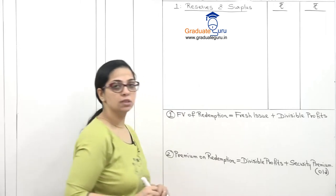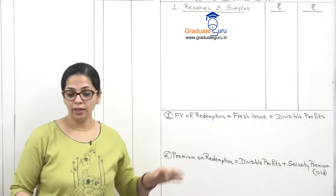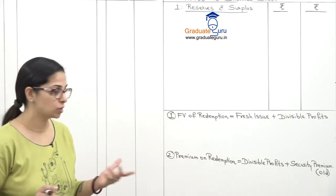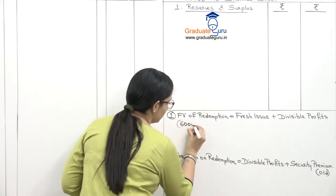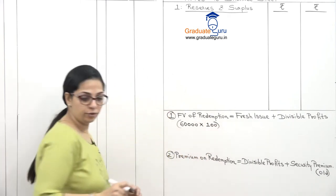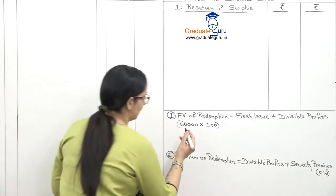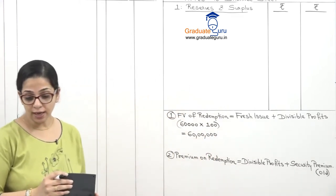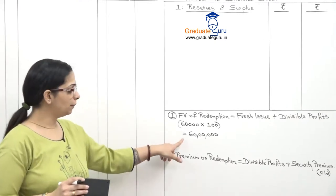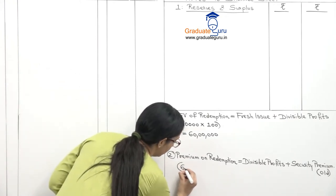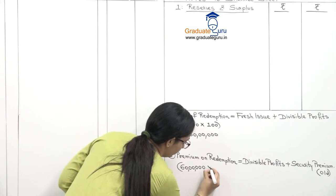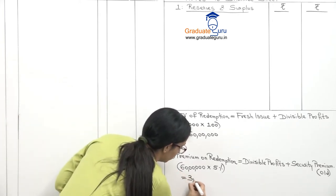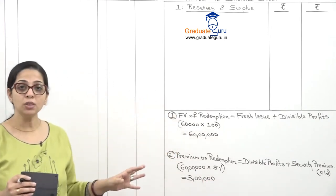For the face value equation, only the fresh issue of equity shares qualifies — not the debenture issue. The fresh issue amount used here is only the face value component, not the premium. So face value of equity shares issued = 15 lakhs. From total face value of 60 lakhs, 15 lakhs comes from fresh issue. The balancing amount from divisible profits = 60 lakhs minus 15 lakhs = rupees 45 lakhs.